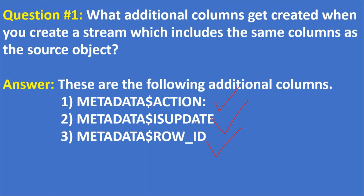Please note that these three columns are all virtual columns. For example, if you take an employee table, assume there are three columns in the employee table: employee number, employee ID, and salary. When you create a stream on this employee table, your stream is going to have six columns: employee number, employee ID, employee name, salary, and these three metadata columns.